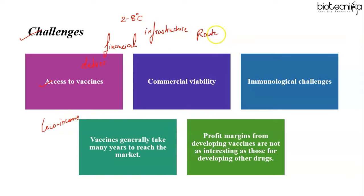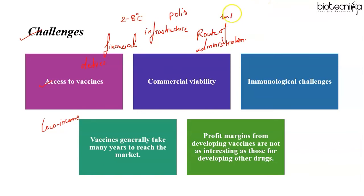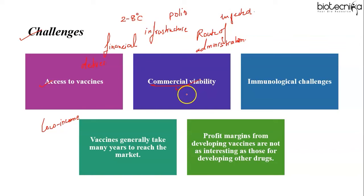Route of administration can also limit access. Oral vaccines such as rotavirus, polio, or cholera vaccine and nasal vaccines such as the live attenuated influenza vaccine can be delivered rapidly on a huge scale by less-skilled workers. Whereas most vaccines are injected, which requires more training to administer and takes longer. Another challenge is commercial viability — there is a lack of vaccines for some diseases for which there is no commercial incentive for development, typically diseases with restricted geographical spread such as Rift Valley fever, Ebola, or plague, or those that only affect poor or displaced communities.